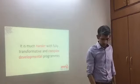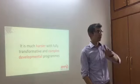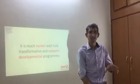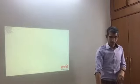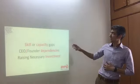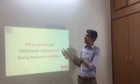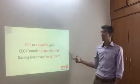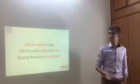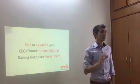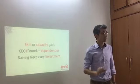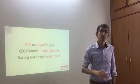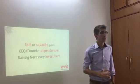One of the main things worth recognizing is where you fall as an entity. Organizations struggle with three key pieces at that stage: skill or capacity gaps, CEO and funder dependencies, and raising necessary investment. These are three major challenges that social impact organizations face when trying to scale. The reality is they still attempt it, but learn all this the hard way after attempting it.